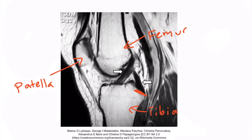The PCL runs from the posterior tibia to the medial femoral condyle. Because this is a lateral view, the posterior aspect of the tibia is indicated here, so this arrow represents the PCL. The ACL is a bit more anterior because it runs from the lateral femoral condyle to the anterior tibia. We can see the anterior aspect of the tibia here, so this arrow must be pointing to the ACL.